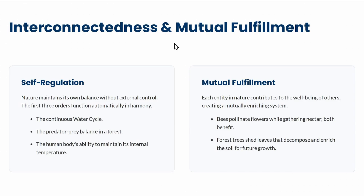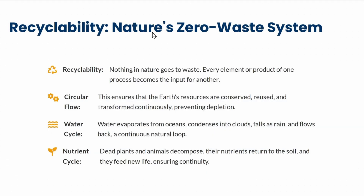The second part of interconnectedness is mutual fulfillment, which means every entity supports others' well-being. Every species and organism has a role to play in the vast scheme of nature and plays it beautifully. For example, bees pollinate flowers while gathering nectar — both benefit. Recyclability is also key: it ensures that nothing in nature goes to waste and everything is reused and regenerated.